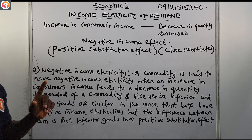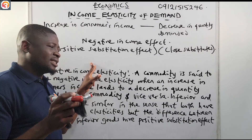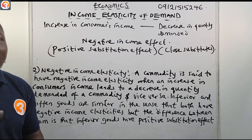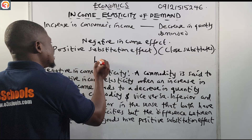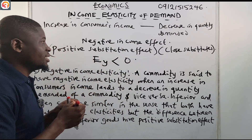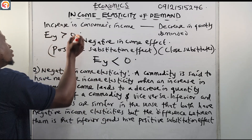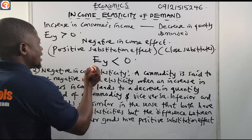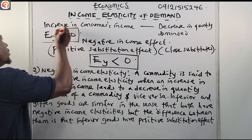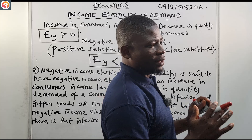For the coefficient of income elasticity: when a good has negative income elasticity, Ey is always less than zero. For positive income elasticity, Ey is greater than zero; for negative income elasticity, Ey is less than zero. Please take note — these are the major points in this section.